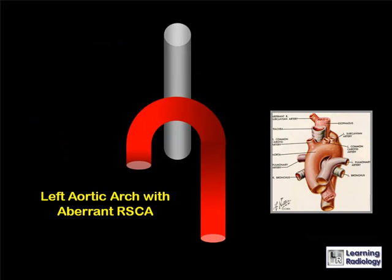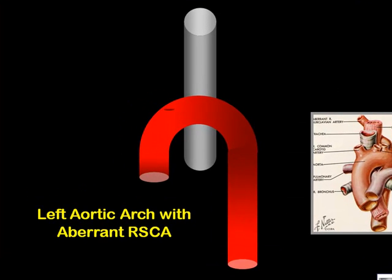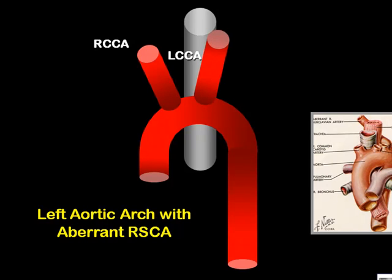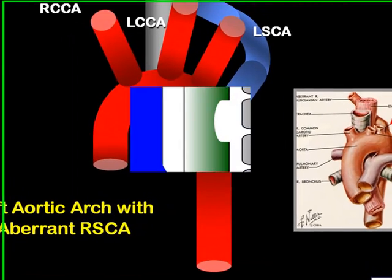The branching for a left aortic arch with an aberrant right subclavian artery: the first branch is the right common carotid artery, the second branch is the left common carotid artery, the third branch is the left subclavian artery, and the last branch of the aortic arch is the aberrant right subclavian artery that passes behind both the trachea and the esophagus.